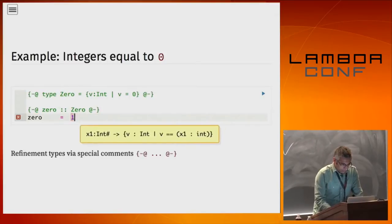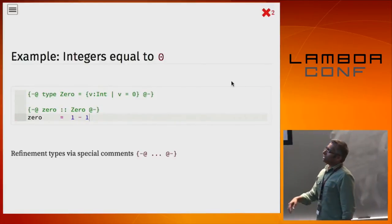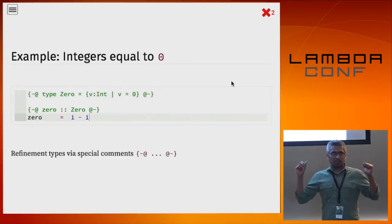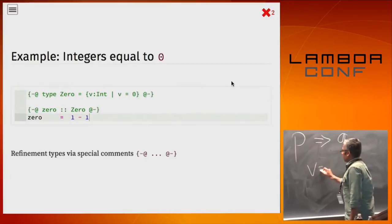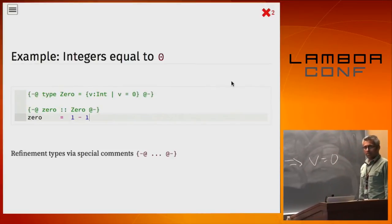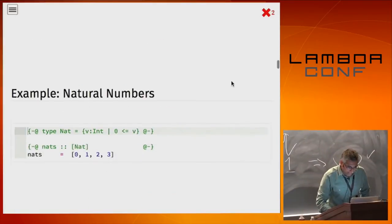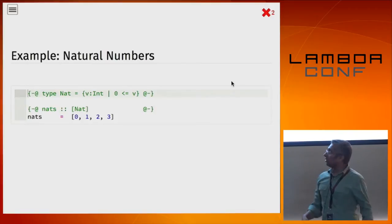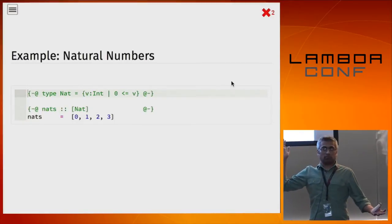Here's a slightly more interesting example. I might define the set of natural numbers: type Nat equals '{v : Int | v >= 0}'. And I can say a list of nats contains 0, 1, 2, 3 — all of those are in fact nats. Here's the first exercise: a type called Pos which looks just like Nat, with 'v : Int | 0 <= v'. Can you fix Pos so that this variable POSS is rejected? Because I want only positive numbers, and clearly 0 is not positive.